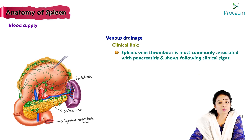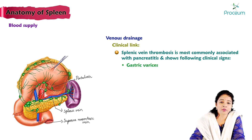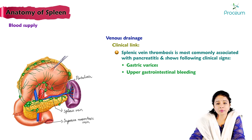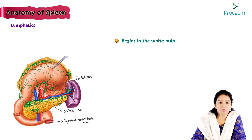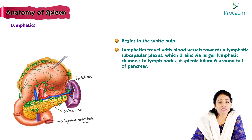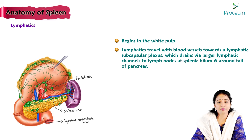Splenic vein thrombosis is most commonly associated with pancreatitis and presents clinically with gastric varices and upper gastrointestinal bleeding. The lymphatic drainage of the spleen begins in the white pulp; lymphatics travel with the blood vessels toward the subcapsular plexus, which drains via larger lymphatic channels to lymph nodes at the splenic hilum and around the tail of the pancreas.